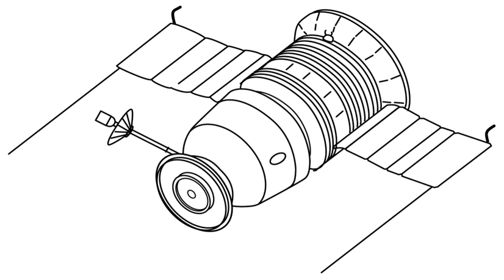However, after orbiting the moon, Zond 6 crashed on its return to Earth due to a parachute failure.